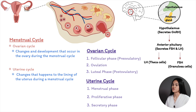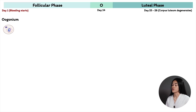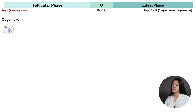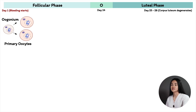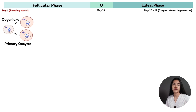We start with an oogonium, or oogonia, which are female primitive germ cells — these are diploid, 2N. This process occurs during fetal development and pre-puberty; they undergo proliferation by mitosis and produce primary oocytes. The oocytes in the ovaries are housed in structures known as follicles, and the primary role of follicles is to provide support for the growing oocyte.